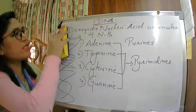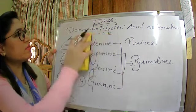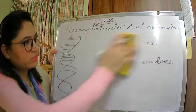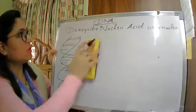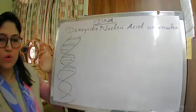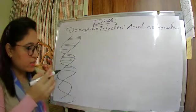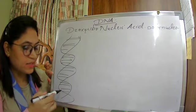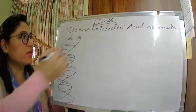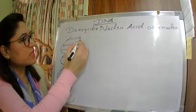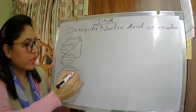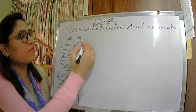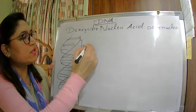Next is genes. What are genes? Genes are part of DNA only. If you look into the structure of DNA — a double helical structure with two parallel strands — small segments of DNA are called genes.